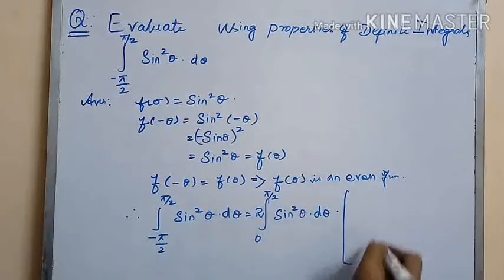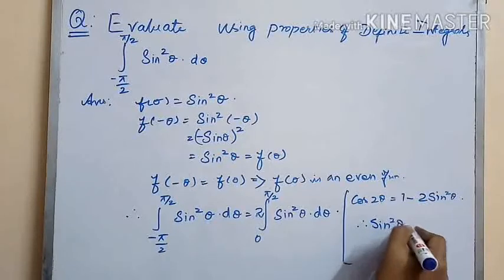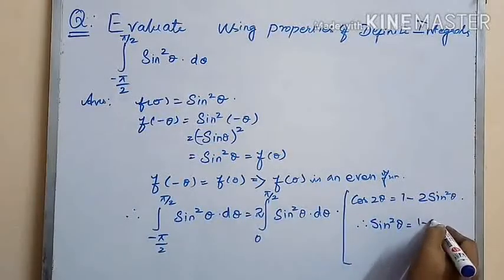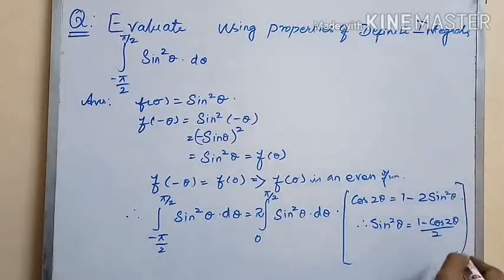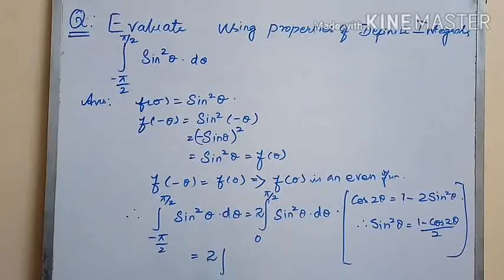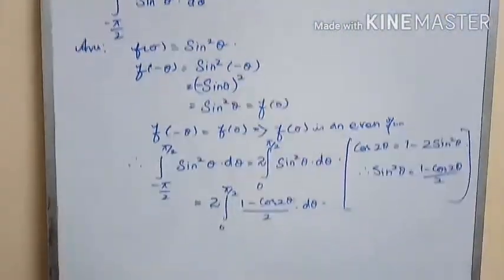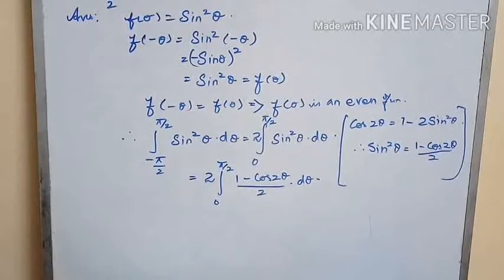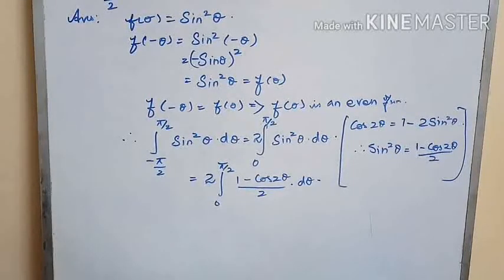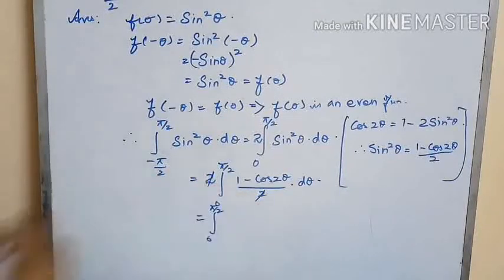Here we are going to substitute sin²(θ) as (1 minus cos 2θ) divided by 2. So we get 2 times the integral from 0 to π/2 of (1 minus cos 2θ) over 2 dθ. The 2 in the numerator and denominator cancels, and we get the integral from 0 to π/2 of (1 minus cos 2θ) dθ.